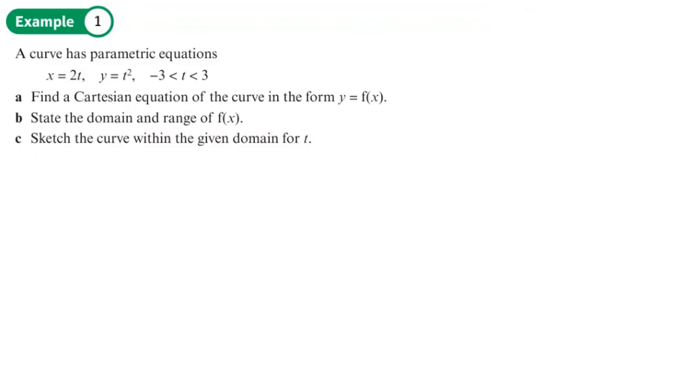Any question where you're told to find a Cartesian equation and you start with a parametric equation, to change from parametric to Cartesian equation, you need to eliminate t. So get rid of t, and the way that you do that is you're going to make t the subject of one and substitute into the other.